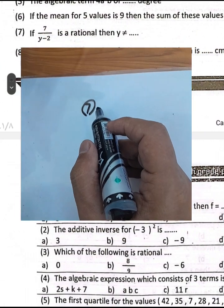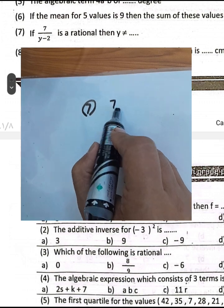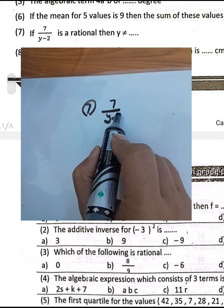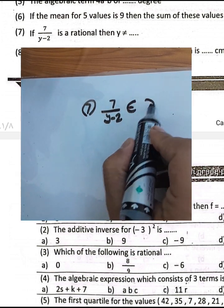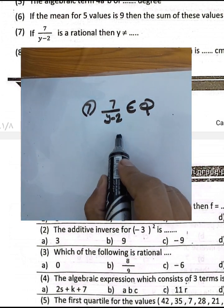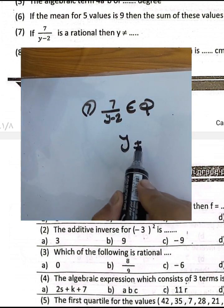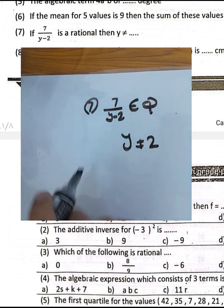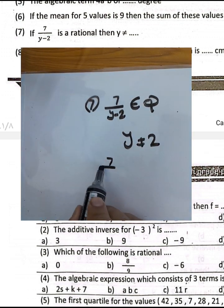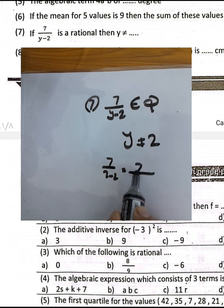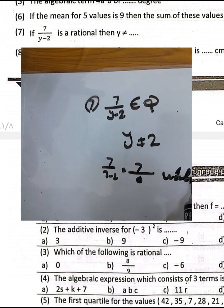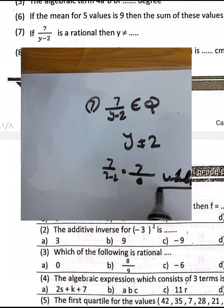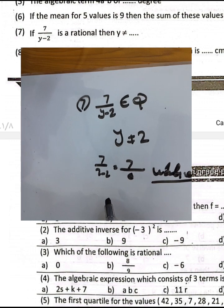Question number 7: if 7 over (y minus 2) is a rational number, then y must not equal 2, because substituting y equals 2 gives 7 over 0, which is undefined.